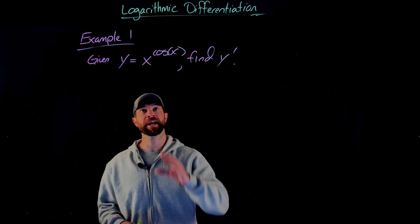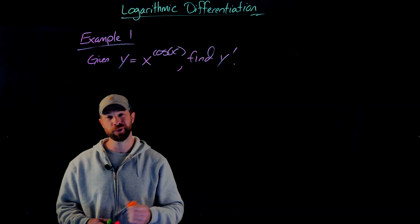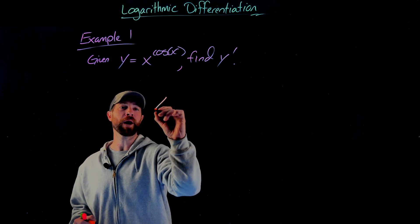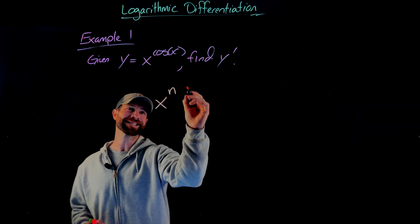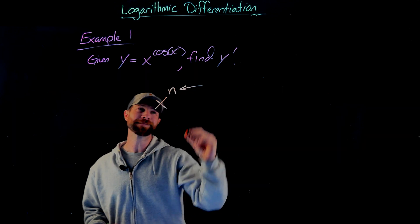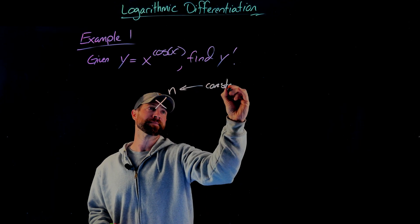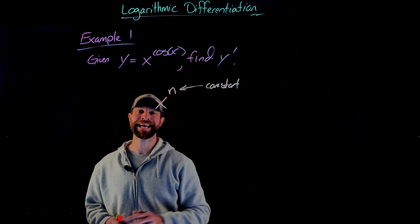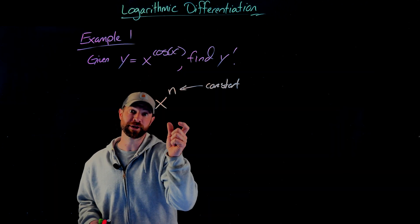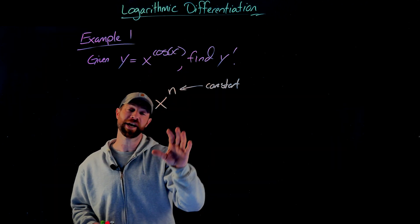You might be thinking I could use something like the power rule, though very importantly, the power rule uses stuff like this, where the n or the exponent is a constant. In this case, our exponent is a variable expression, not a constant, so we cannot use the power rule.